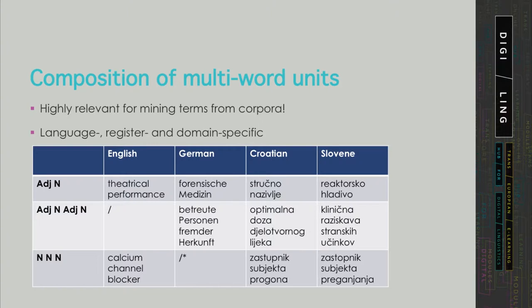For the purposes of mining terms from corpora, the morphosyntactic composition of multiword terms is a very relevant feature. It depends on the language whether terms are predominantly combinations of adjectives and nouns, or whether this order is reversed, as sometimes in Romance languages. Also, some domains may have a preference for verbal terms — think of sports or the military domain.